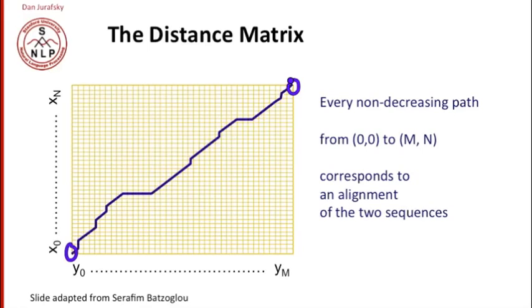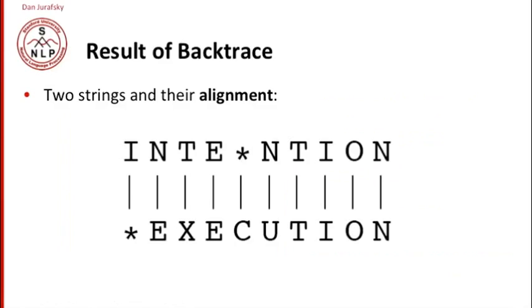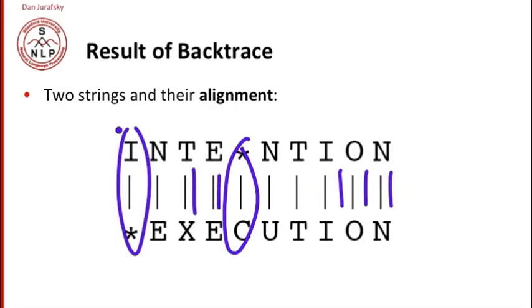An optimal alignment is composed of optimal sub-sequences. That's the idea that makes it possible to use dynamic programming for this task. The result of our backtrace are two strings and the alignment between them. We'll know which things line up exactly, which things line up with substitutions, and when we should have insertions or deletions.